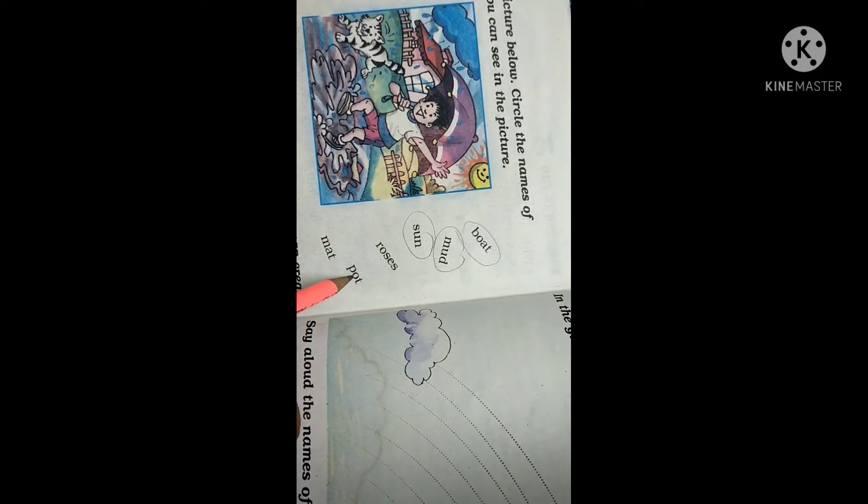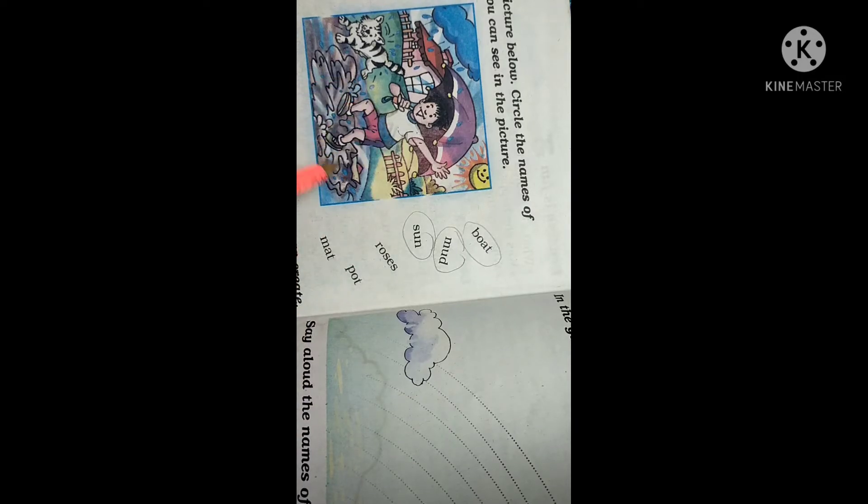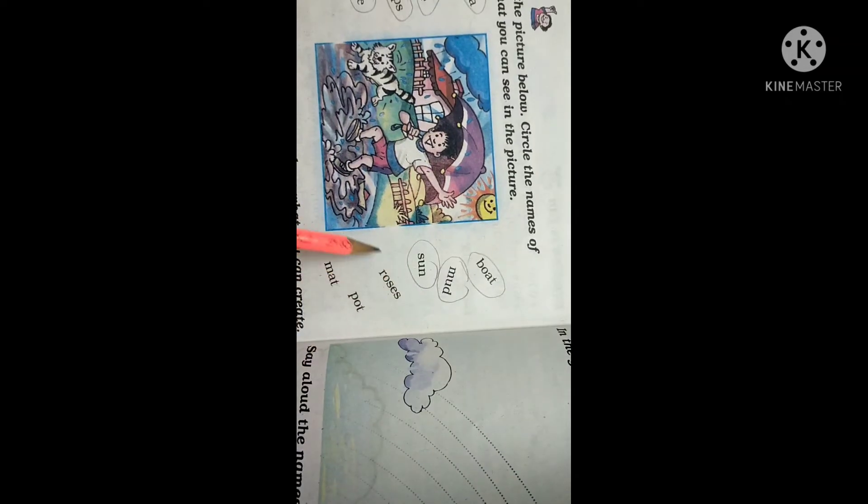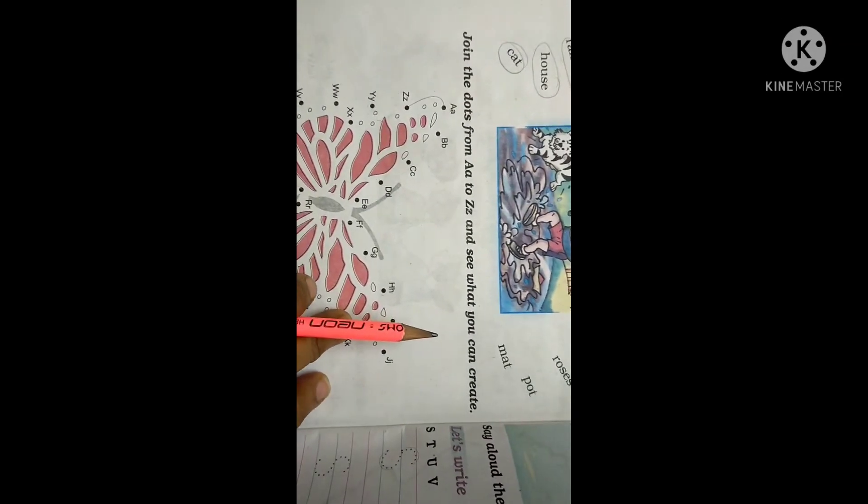Can you see roses anywhere? No. So don't do anything. Pot. Pot? No. So this many words are there that we have to circle.